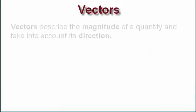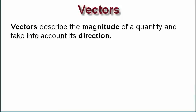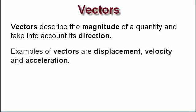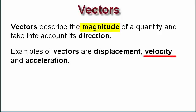By contrast, vectors describe both the magnitude of a quantity and the direction. In this case, we do care about whether you're traveling east or west, for example. Other examples of vectors are velocity and acceleration. With velocity, we care about how fast you're going and what direction you're traveling. The same applies to acceleration, where we're measuring how fast velocity is changing over time.